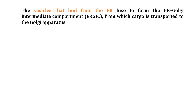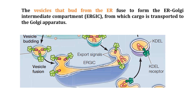Proteins within the lumen of one organelle are packed into budding transport vesicles and then released into the lumen of the recipient organelle following vesicle fusion. Vesicles that bud from the ER fuse together to form the ER-Golgi intermediate compartment, or ERGIC. This is where vesicle fusion occurs.